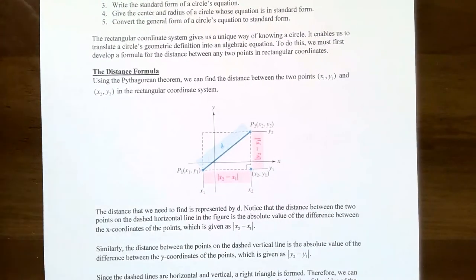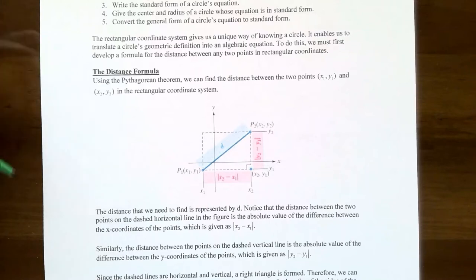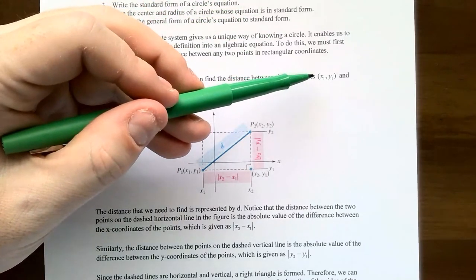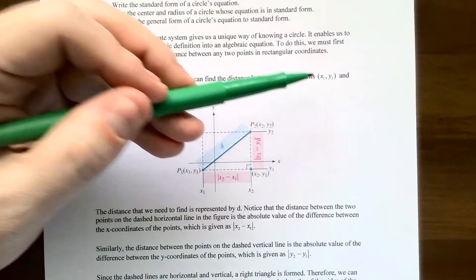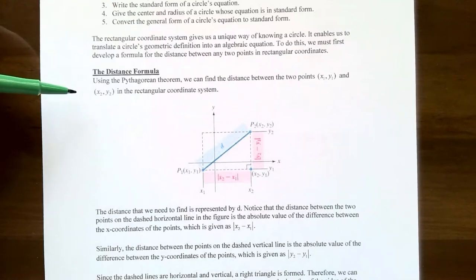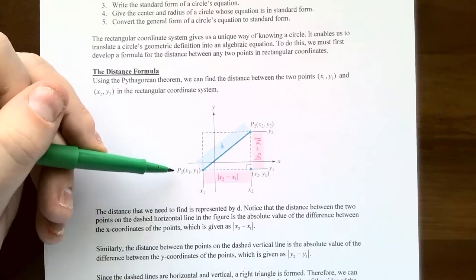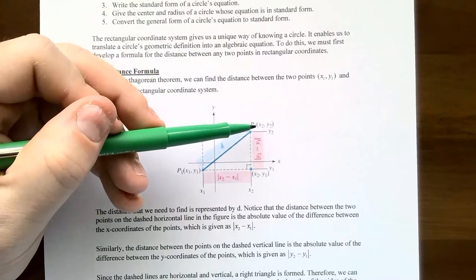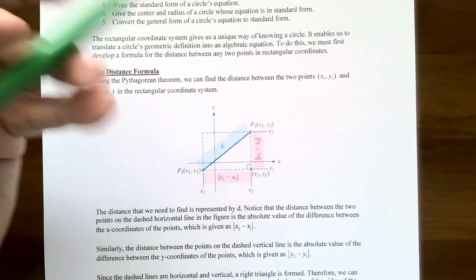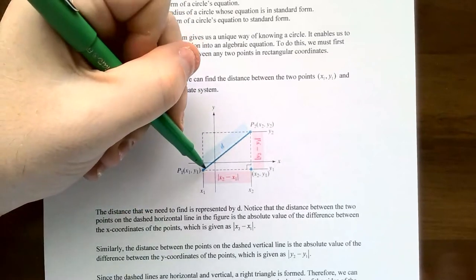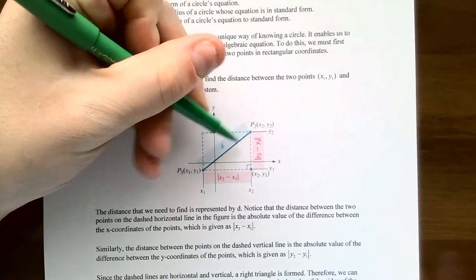You can actually derive the distance formula using the Pythagorean Theorem. So let's say you have two points in the rectangular coordinate system. One point is at x₁, y₁, and the other point is at x₂, y₂. Let's label the first point x₁, y₁ as P₁, and the other point x₂, y₂ as P₂. And you want to find out what is this distance between the two points — that's lowercase d.